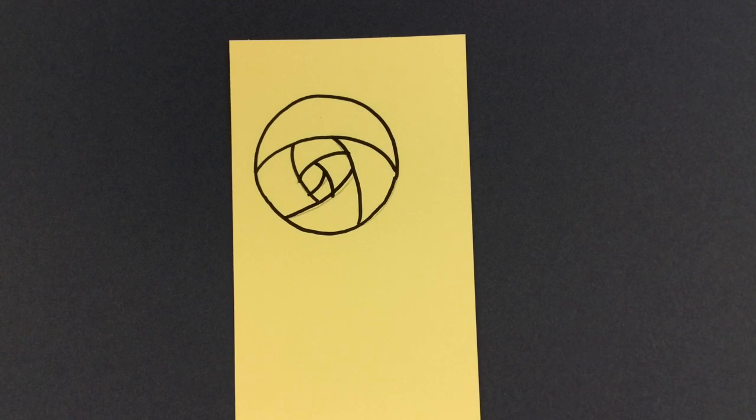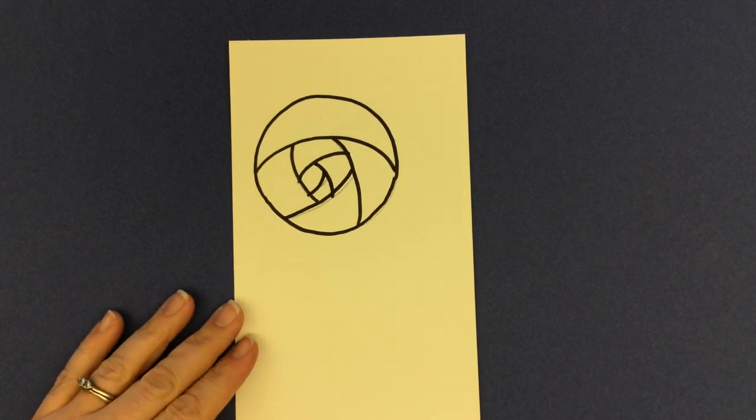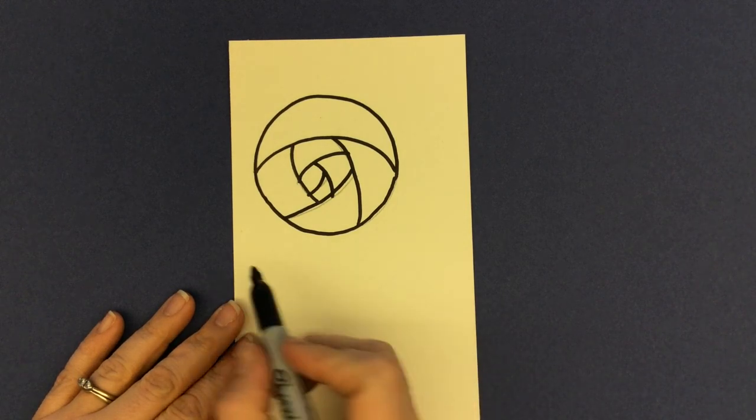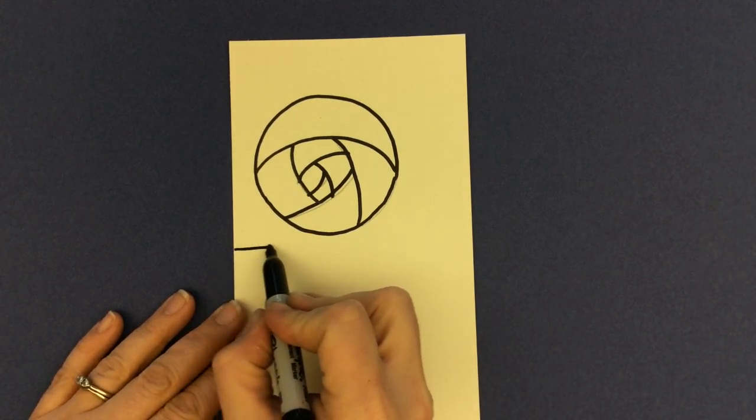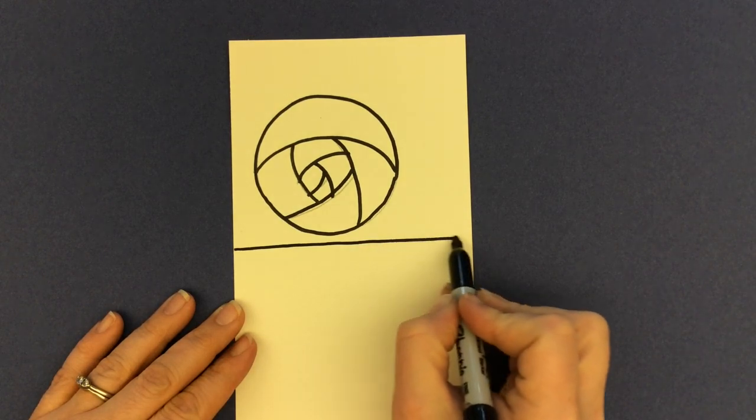There's two different kinds of lines that we're going to use today. One is a vertical line and one is horizontal. Let's start with our horizontal. If you remember, horizontal lines go from side to side.